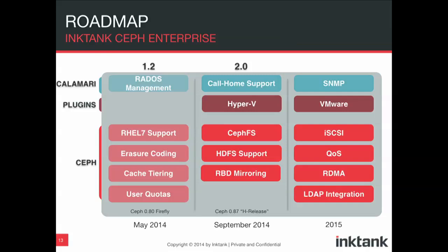That was what is coming out in Calamari in Ink Tank Ceph Enterprise 1.2. Looking further into the future, we hope to add call home support — which means your cluster will let Ink Tank or your support provider know that something's going wrong. We're hoping to add Hyper-V support in 2.0, and beyond that we're looking at VMware support. For the next major version of Ceph — the H release — we're targeting CephFS to be ready, which means you'll be able to mount a Ceph cluster as a file system with POSIX semantics. HDFS support, allowing you to use Ceph as a drop-in replacement for HDFS in Hadoop, is also targeted for 2.0.